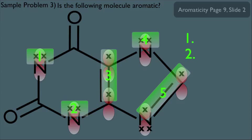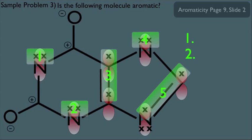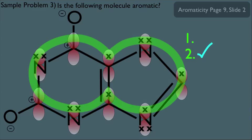But what about the remaining carbons in the ring? We need that uninterrupted pi cloud. We can perform a resonance move and say these pi electrons jump up on top of this oxygen, and do the same for this carbon, with electrons jumping up on top of the other oxygen. The resulting structures give us carbocations within the ring. Since carbocations are sp2 hybridized, they have an empty unhybridized p orbital. So we've met both criteria — an odd number of pi electron pairs and an uninterrupted pi cloud — meaning this molecule is definitely aromatic.